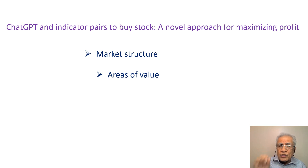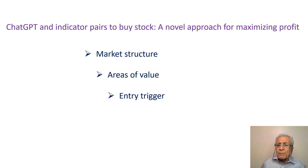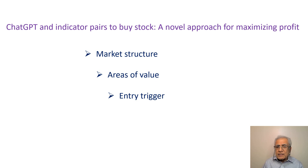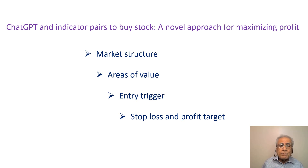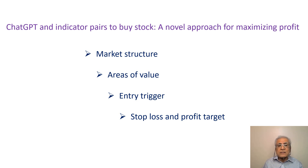ChatGPT is also used to determine entry triggers, which are points in the market where it is deemed most appropriate to enter a trade. This is done by identifying patterns and signals generated by the indicator pairs. Risk management is an important aspect of trading, addressed here by implementing strategies such as stop loss and profit target. The stop loss limits potential losses by setting a price level at which a trade is automatically closed, whereas the profit target locks in profit by setting a price level at which the trade is automatically closed.